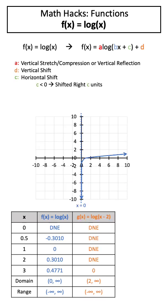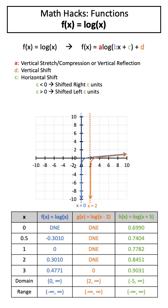If c is less than 0, this will shift our function right c units, whereas if c is greater than 0, this will shift our function left c units.